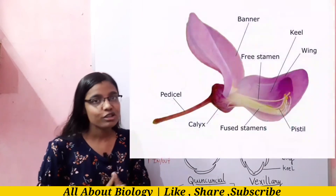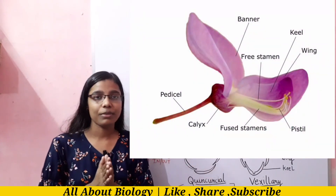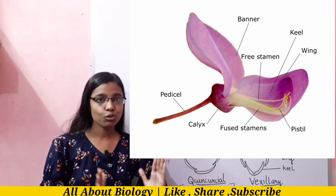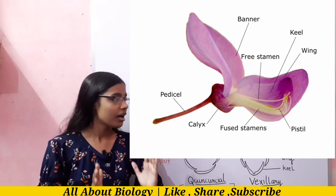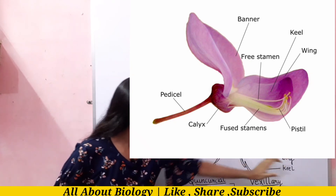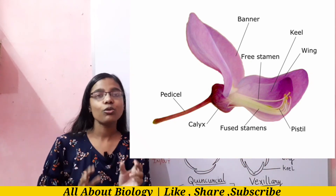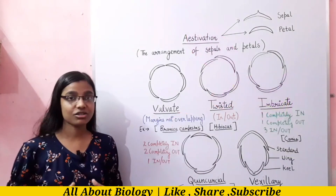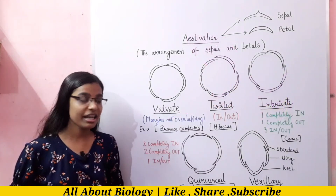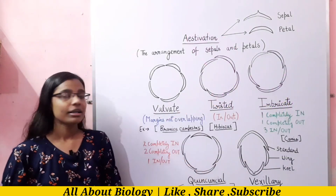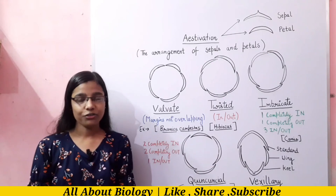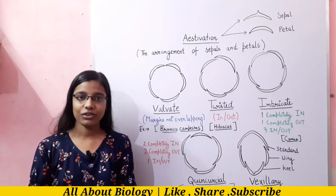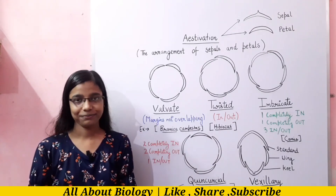In vexillary aestivation, you will see a large standard, two lateral structures called the wings, and two fused structures called the keel. This is all for today. If you like the video, please subscribe to my channel for further updates. Thank you so much.